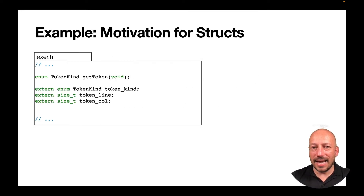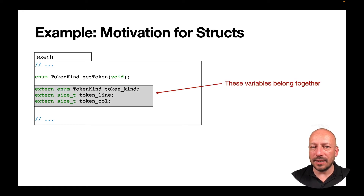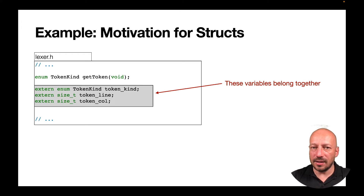In the header file for the Lexer, we currently declare three global variables that belong together because they contain information about the token found by a previous call of getToken — the token kind and its position in the source file: the line number and the column number. The fact that these variables belong together we currently express with a coding style convention: they all begin with the prefix token underscore.